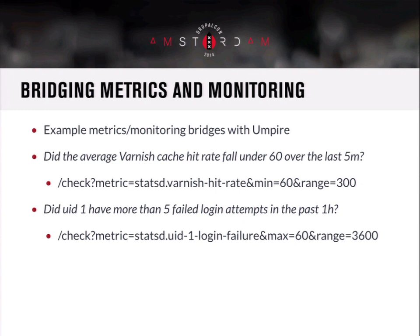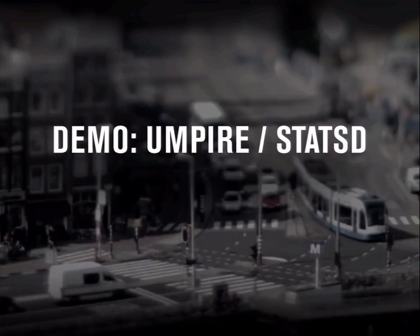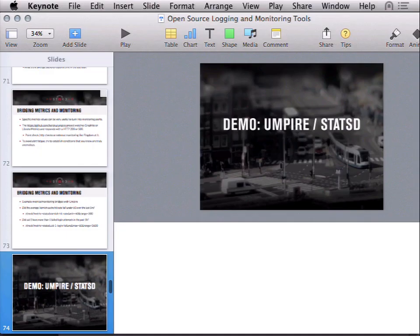An example of how you could work with Umpire: using Graphite configuration syntax, you could say 'check the statsd.varnish_hit_rate metric, and set either a minimum or maximum and a range in seconds.' You could ask: did the average Varnish cache hit rate fall under 60% over the last five minutes? Or did UID 1 have more than five failed login attempts in the past hour? Let me do a quick demo — we've already got Umpire and StatsD set up here.